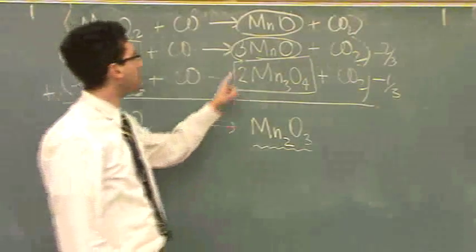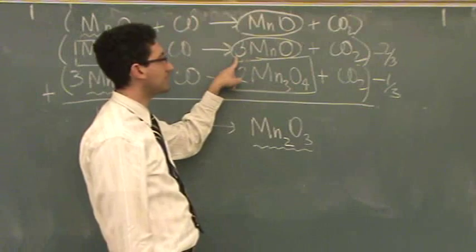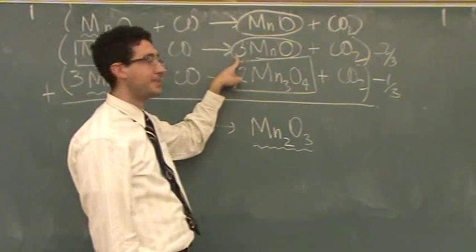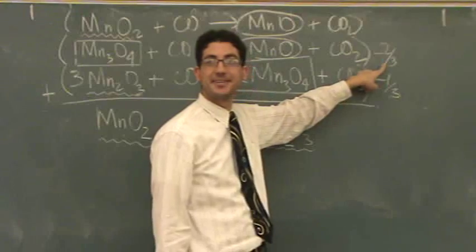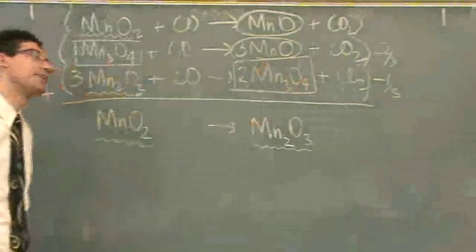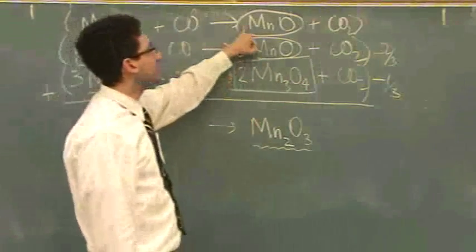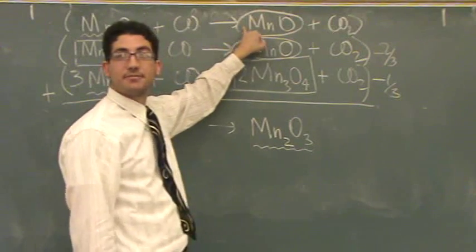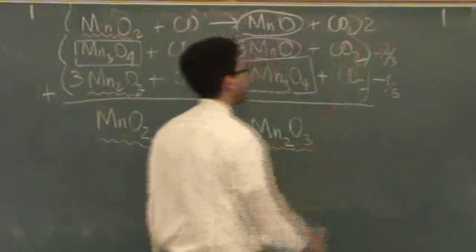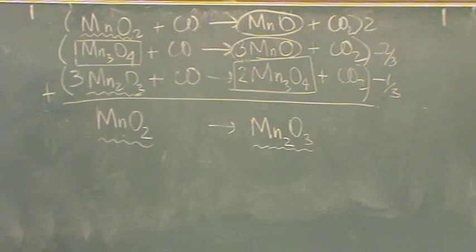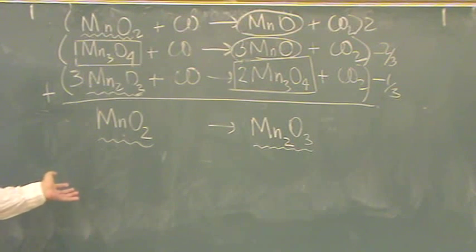But, I have how many of these? Two. Three times two-thirds is two. Two. So, I need two of these. Okay? I'm done with the multiplication. Now, if I can add, I'm done.